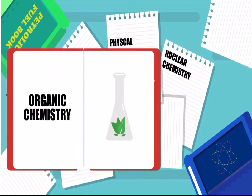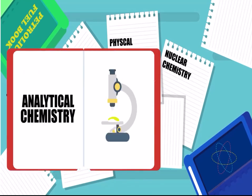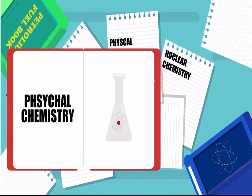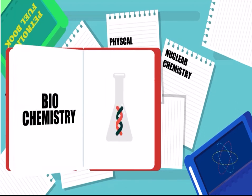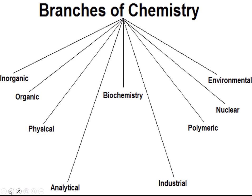In this video you can see there are many different branches of chemistry: Organic chemistry, Inorganic chemistry, Analytical chemistry, Physical chemistry, and Biochemistry. Now let's go to the next slide about branches of chemistry. There are many branches, but the main nine are: Inorganic chemistry, Organic chemistry, Physical chemistry, Analytical chemistry, Biochemistry, Industrial chemistry, Polymeric chemistry, Nuclear chemistry, and Environmental chemistry.